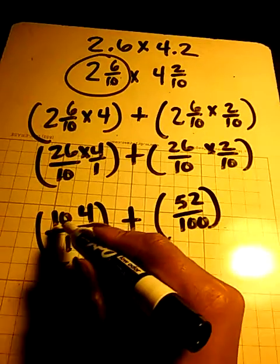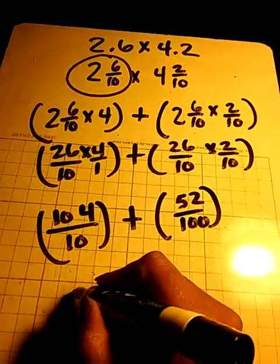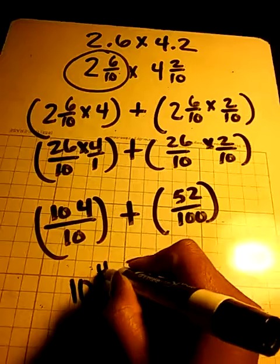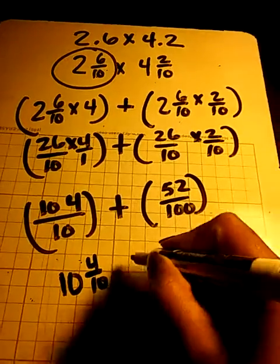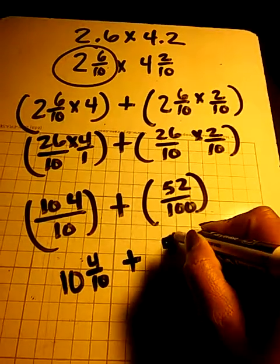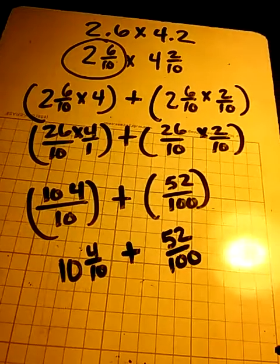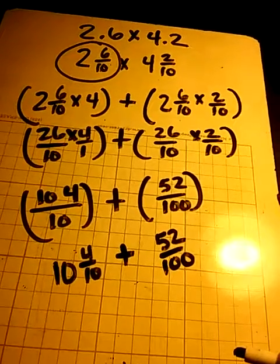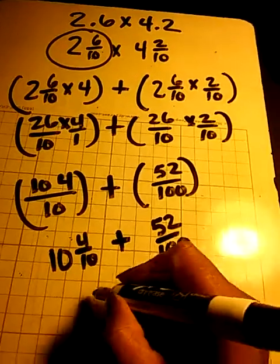So 104 tenths is 10 and 4 tenths, plus 52 hundredths. And we can write that using our adding decimals skills.